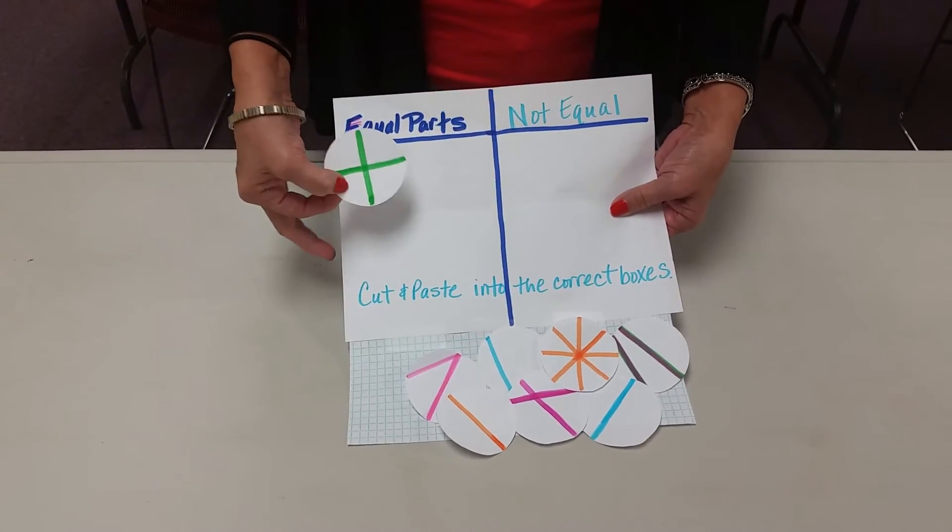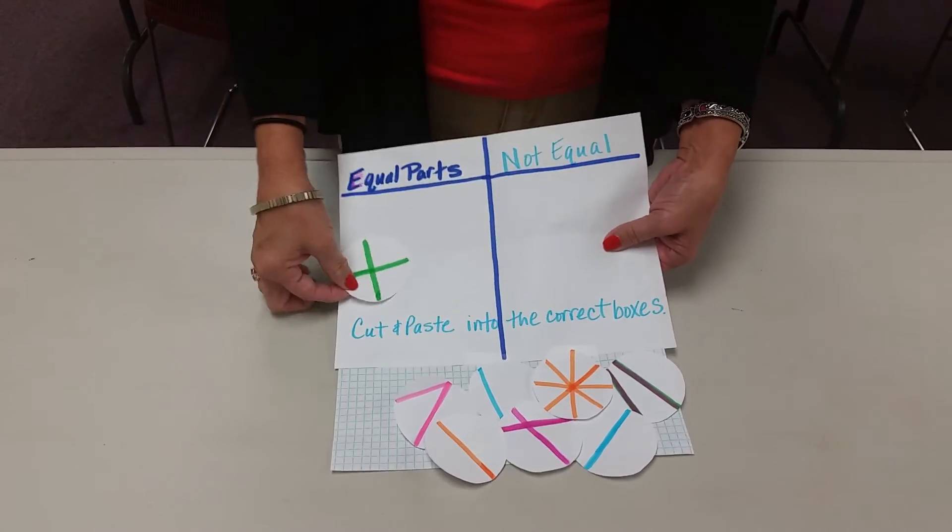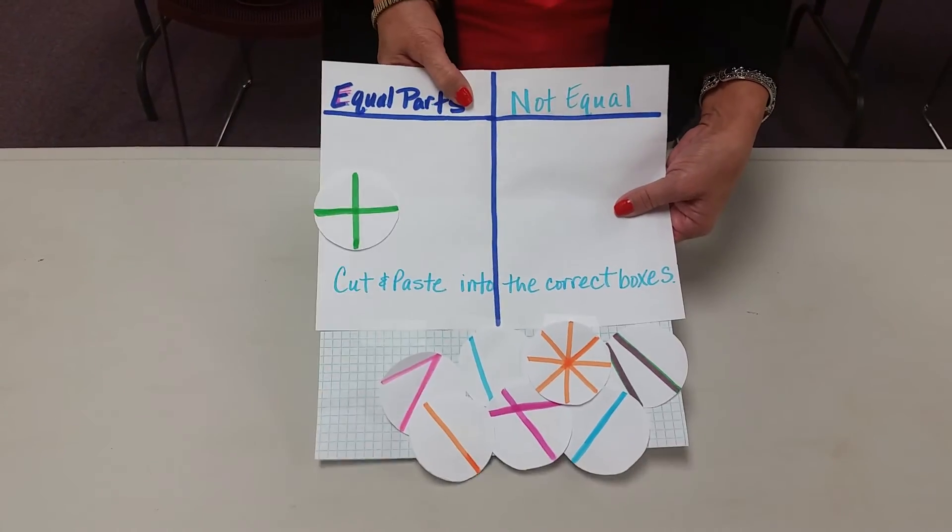This little one is broken into equal parts - it would be fourths - so you would place that in the equal parts section.